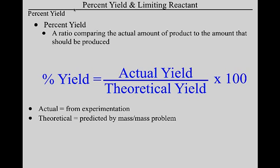The percent yield is the amount you got right, and the percent error is the amount you got wrong — add them together and you get 100. The percent error equation is more complicated than the percent yield equation, so if you can remember percent yield, you can derive the other.